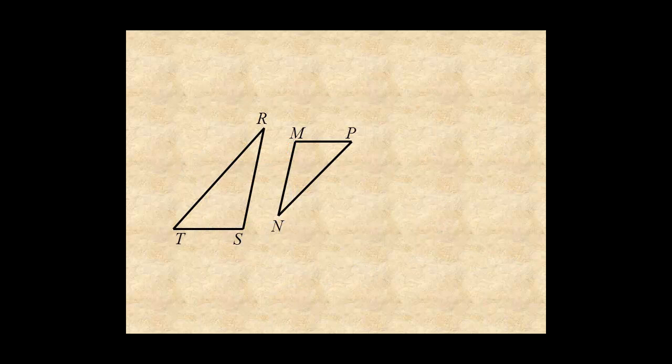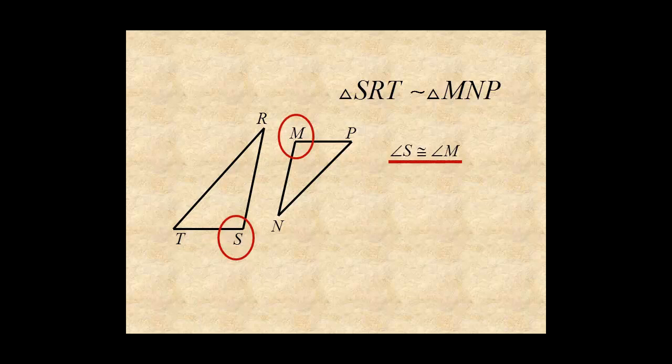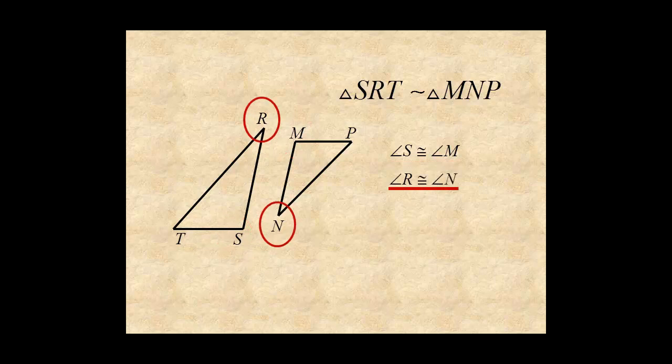The similarity statement tells you which angles and sides are corresponding. Angle S corresponds to angle M. Angle R corresponds to angle N. And angle T corresponds to angle P.